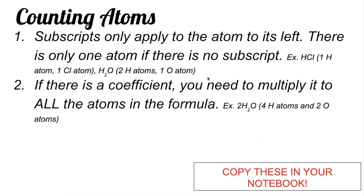Rule number two: if there is a coefficient, you need to multiply it to all the atoms in the formula. A coefficient is the number that comes before the chemical formula. For example, in 2H2O, the small number is called your subscript, while the bigger number in front of the chemical formula is called the coefficient. Your subscript only applies to the element to its left, not to all the elements in your chemical formula. But the coefficient is applied to all the elements that you have there.